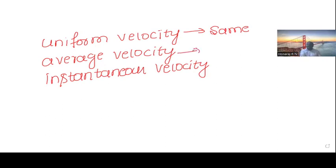Average velocity is nothing but initial velocity plus final velocity divided by 2. That we call average velocity.